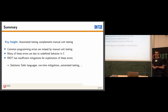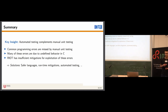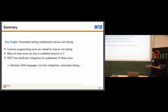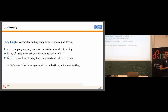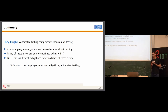Another key observation is that many of the bugs we found — partially due to our error model — are due to undefined behavior in C, like buffer overflows and spatial safety violations. These issues exist because C simply does not define behavior on a buffer overflow. And as I motivated at the beginning, RIOT has relatively few protection mechanisms against exploitation of these issues.